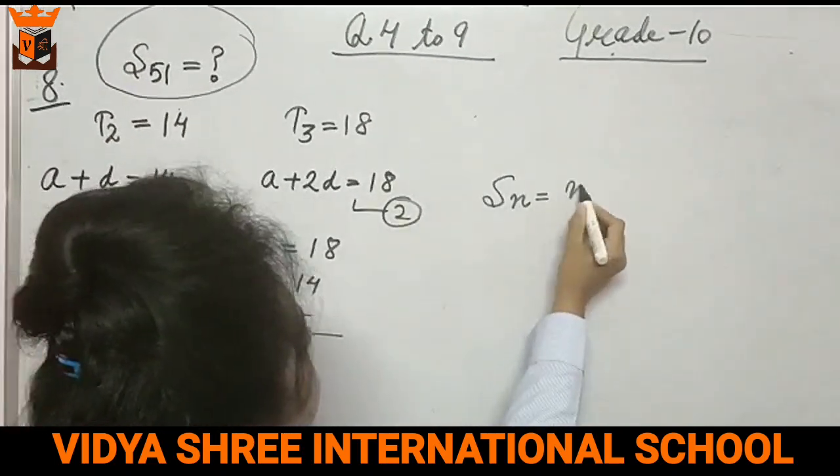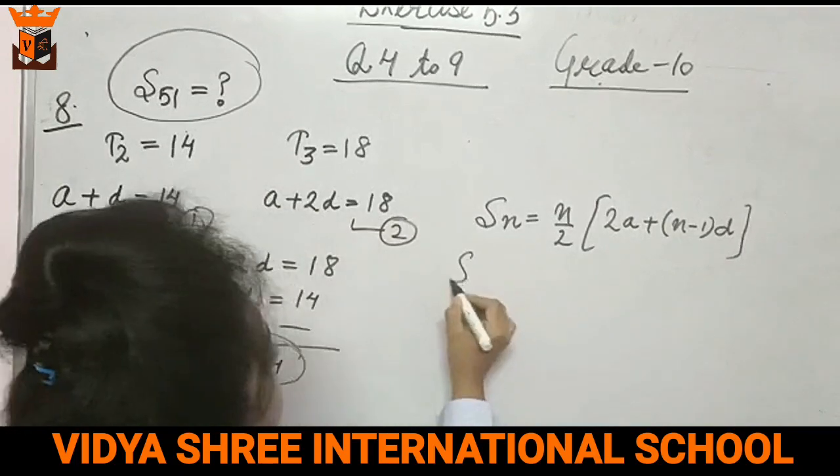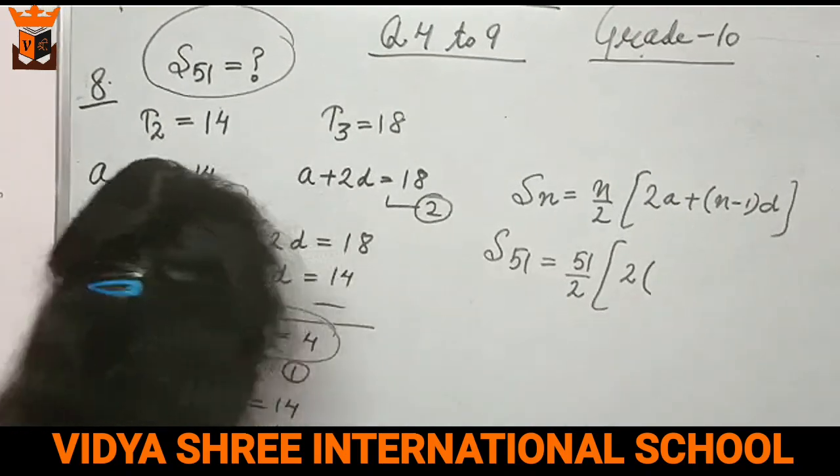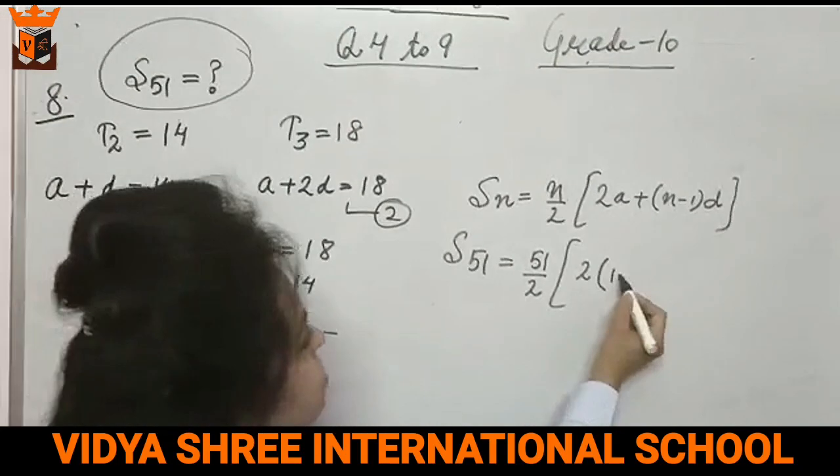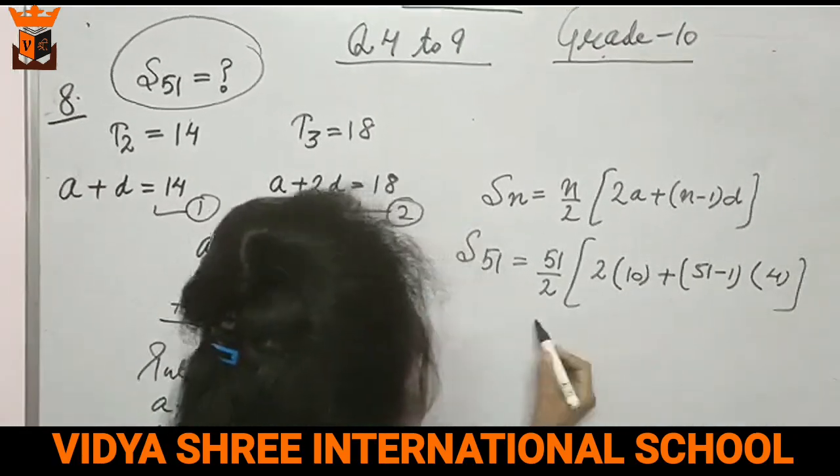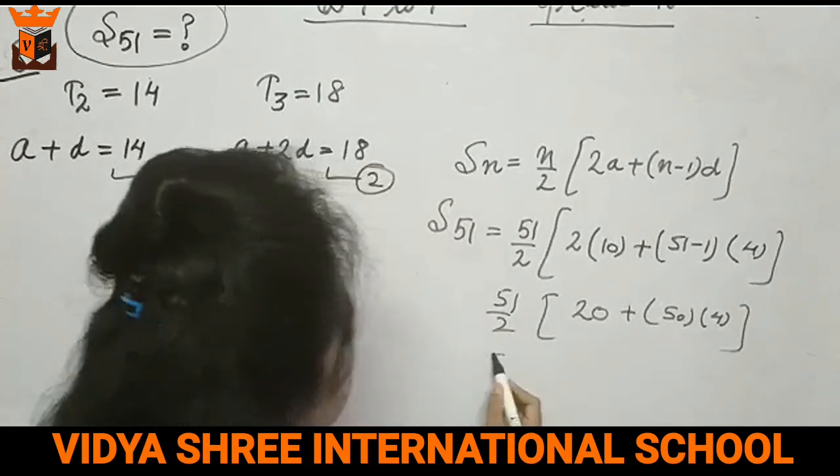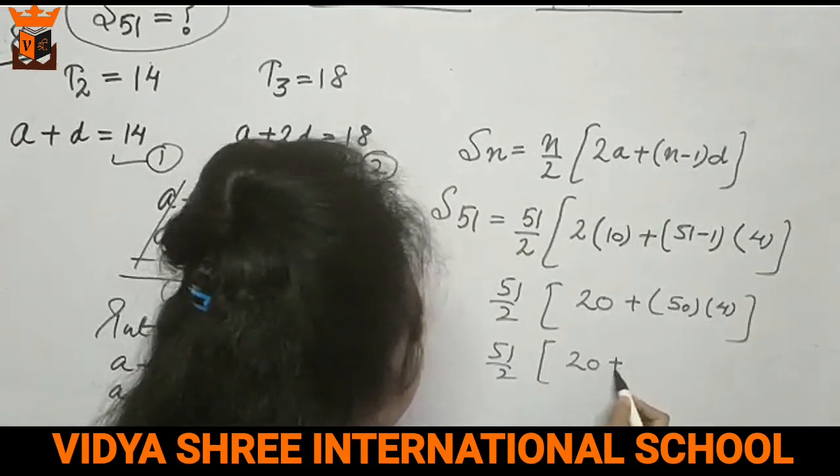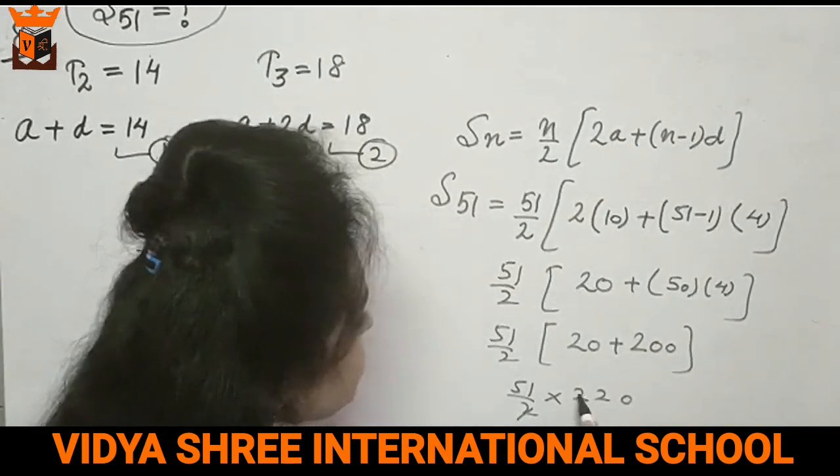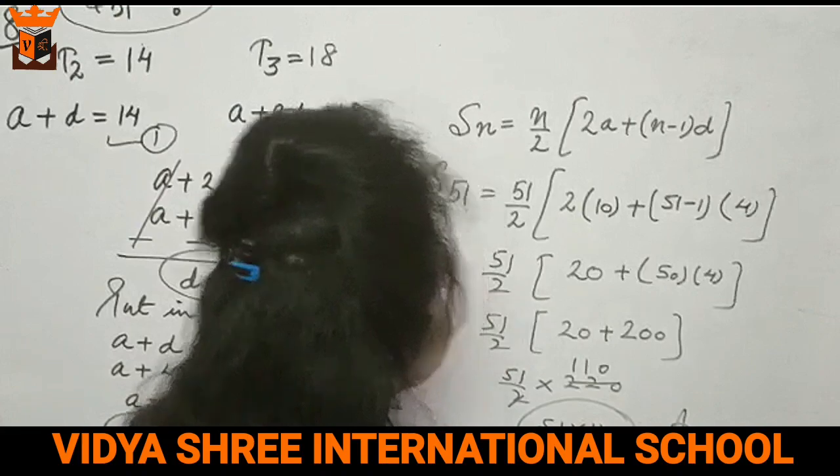Now we find S51. n by 2 times (2a plus (n minus 1) into d). 51 minus 1, and the value of d is 4. 51 by 2, 10 times 2 is 20. This is 50 into 4, which is 200. So 51 by 2 into 220. Cancel, this becomes 110. So multiply 51 by 110, and that is your answer.